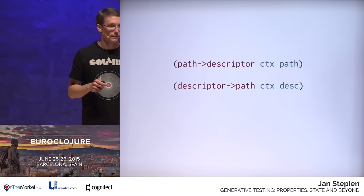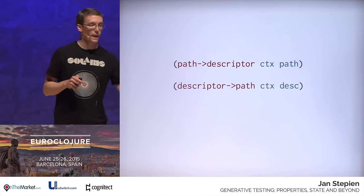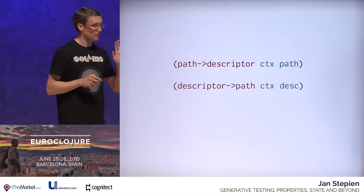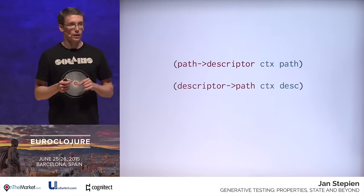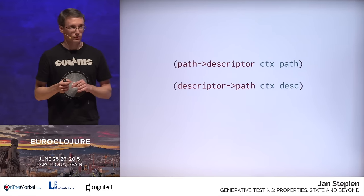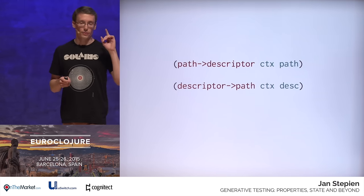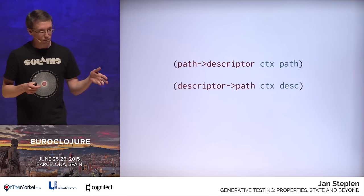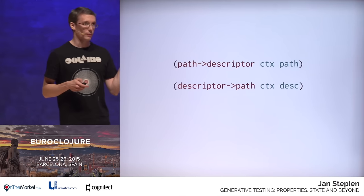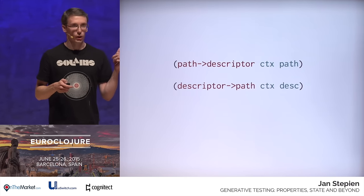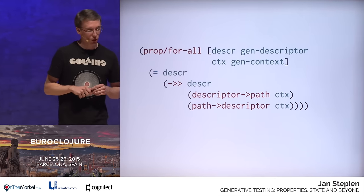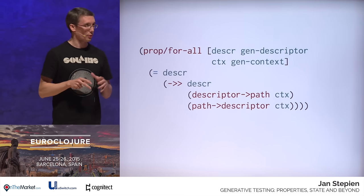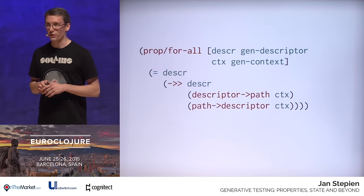We decided to hide the entire implementation of our new routing behind a simple API exposing just two functions: path-to-descriptor, where descriptor is a data structure representing a given page on our website, and a corresponding function for generating strings. Assuming that we have the same context, composing those two functions yields an identity function in the domain of paths or descriptors. So let's test it. For all descriptors generated by our custom generator of valid descriptors and for all contexts, the following equality should always hold.